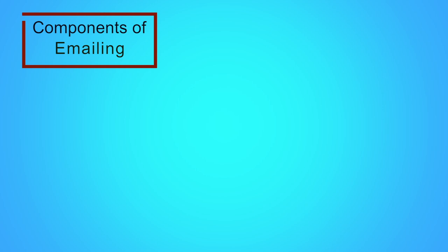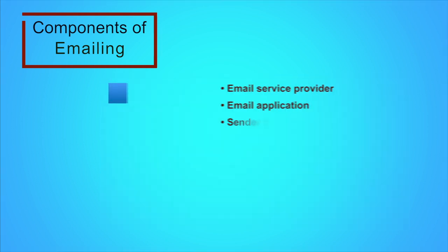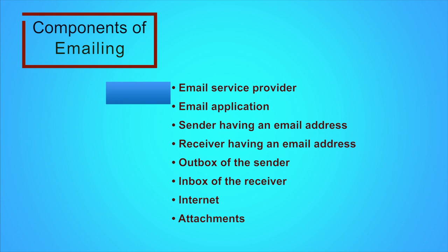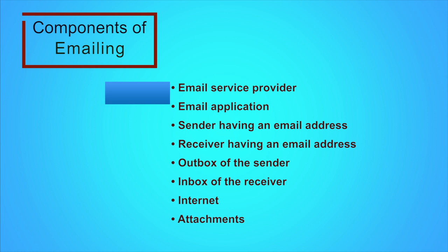Let us now segregate all the important components of emailing and look at them closely. Emailing is a process where a sender writes a message and sends it to a specific address or addresses. The main items in this process are: email service provider, email application, sender having an email address, receiver having an email address, outbox of the sender, inbox of the receiver, internet, and attachments.